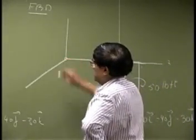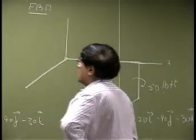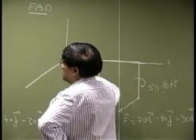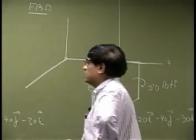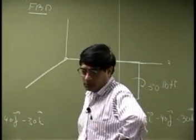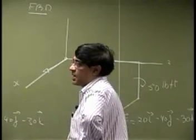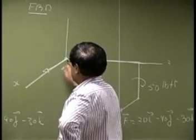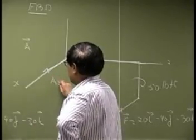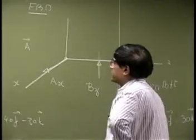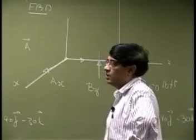Then you're going to look at the point A, and at point A you should look at which direction this point is not allowed to go. You can see that there will be no movement along the X direction, and if I call the reaction as A then you get an unknown component as AX. Then there is no movement in the Y direction.